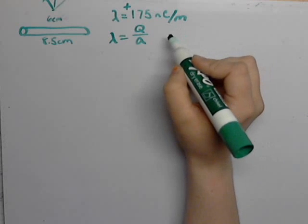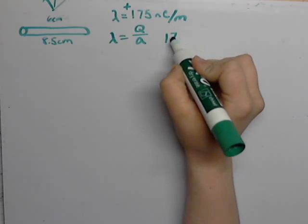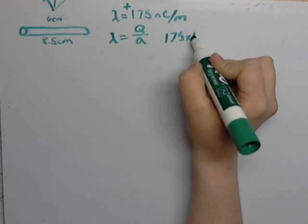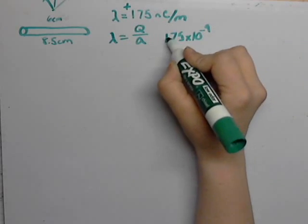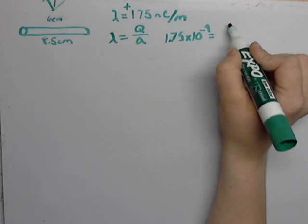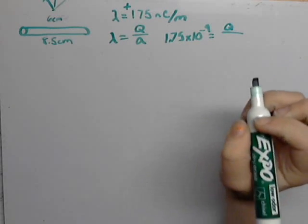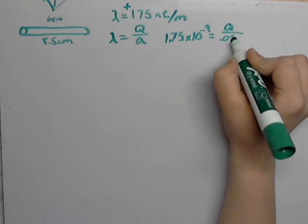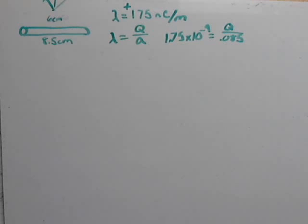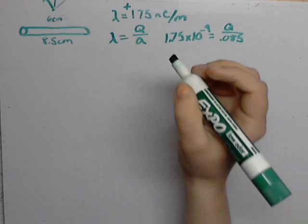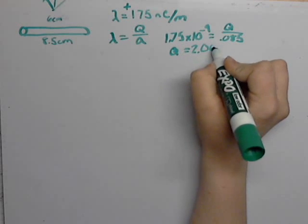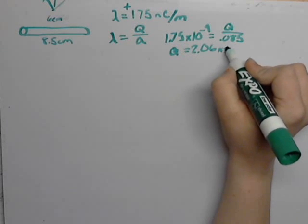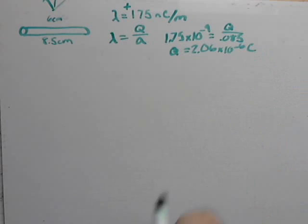So when we do that, we have 175 times 10 to the negative 9th for the nanocoulombs equals Q divided by 8.5 centimeters, which is 0.085 meters. So then you should get a Q of about 2.06 times 10 to the negative 6 coulombs.